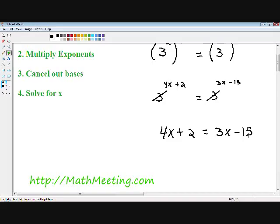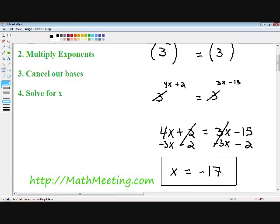Now the last thing we have to do is solve for x. Many of you probably already know how to do this. Subtract 3x from both sides and subtract 2 from both sides. And we are left with x equals negative 17. And this is our final answer.